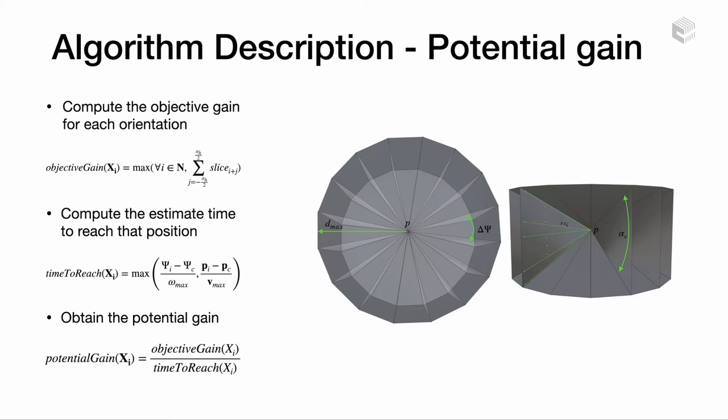Instead of randomly assigning psi, we optimize the yaw angle for each candidate as follows. We compute the objective gain of the frustum for n discrete orientations around the 360 degrees. Finally, the orientation with the highest objective gain is assigned to the candidate. The objective gain is divided by the estimated time to reach that position.